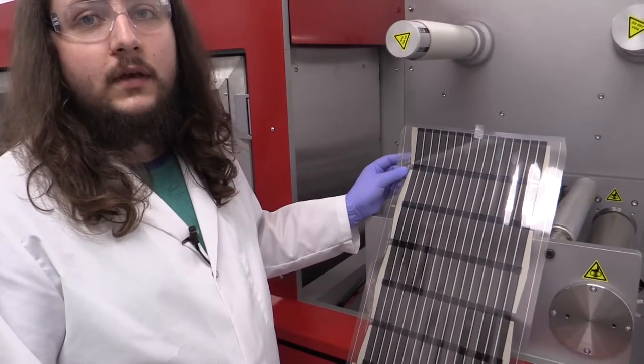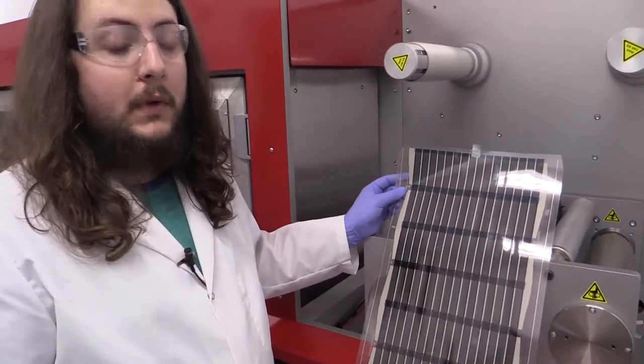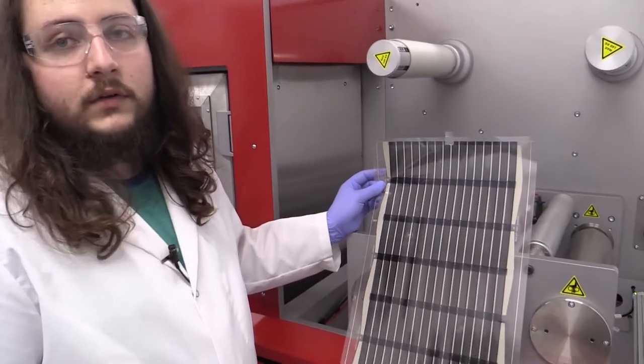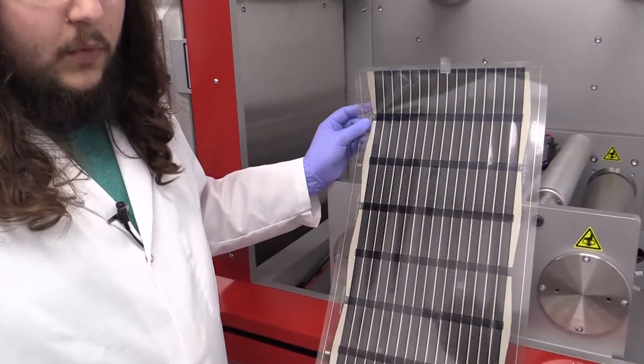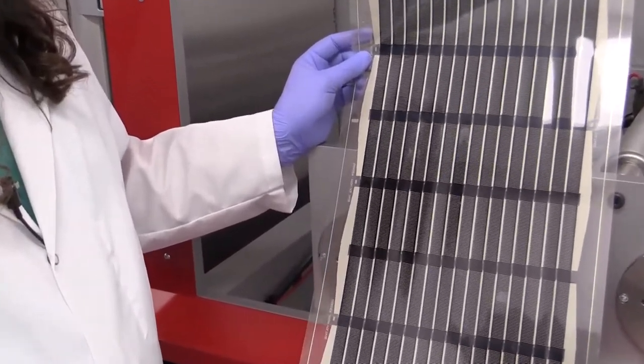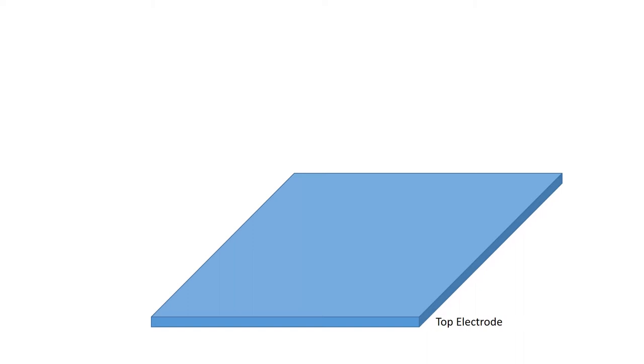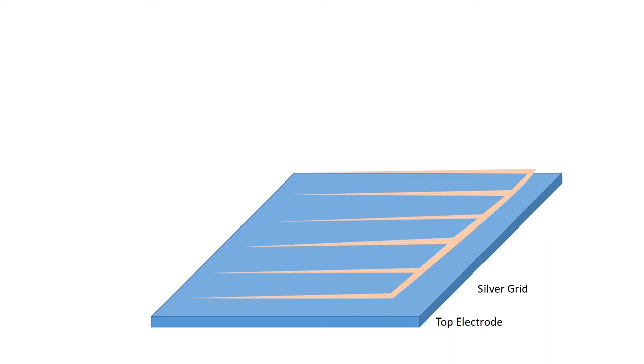What we're printing here is a solar cell module and in order to do that we print multiple layers. To start we need a top electrode in which case you can either use a transparent conductor or a printed silver grid which will be done on something like the print station we have at the beginning of the roll.